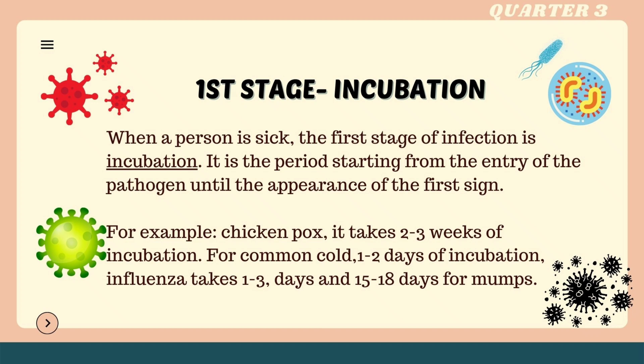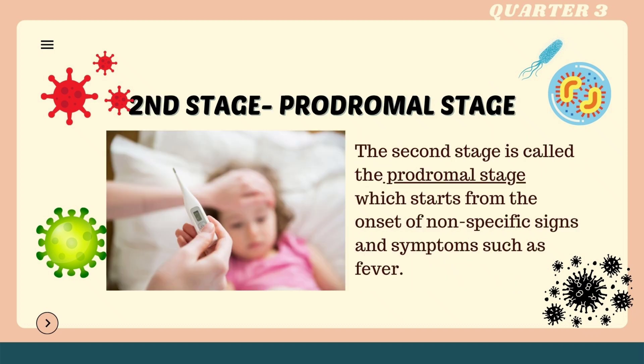Influenza takes one to three days, and 15 to 18 days for mumps. The second stage is called the prodromal stage, which starts from the onset of non-specific signs and symptoms such as fever.